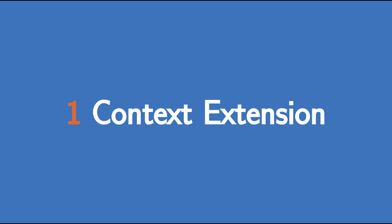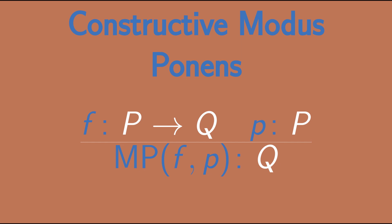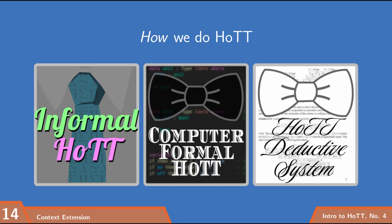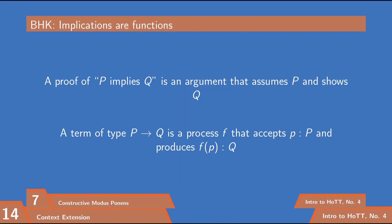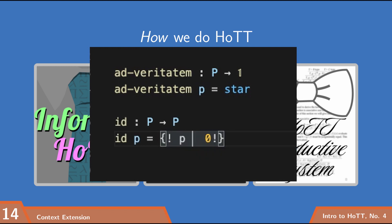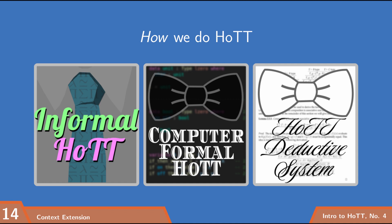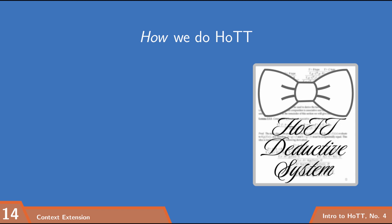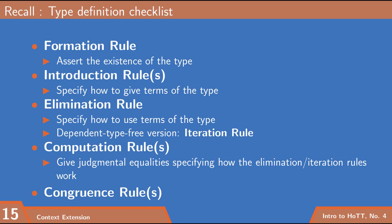Last time we introduced arrow types — types of the form P arrow Q for some types P and Q. We talked informally about what that means, how to interpret it logically, and played around in the computer formalism to write terms of these types. Now I want to cover arrow types in our third way of doing HoTT, namely the HoTT deductive system.